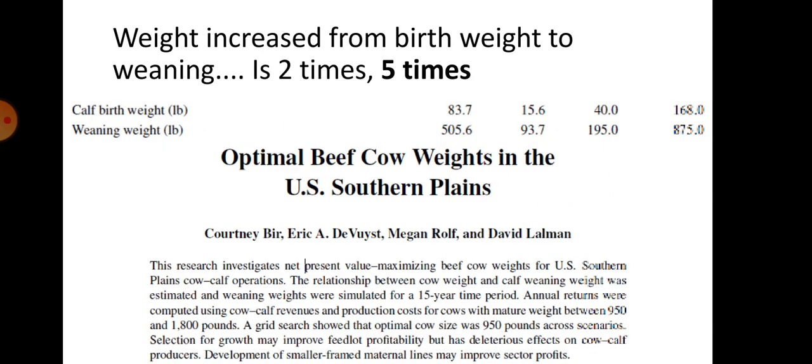Weight increases from birth weight to weaning approximately 5 times. This can be understood from a research table where calf birth weight to weaning weight ratios are given: 83 to 505, 15.6 to 93.7, 40 to 195, and 168 to 875 — all approximately five times. This table is taken from a research paper on optimal beef cow weight in the U.S. Southern Plains.